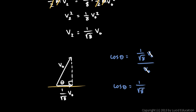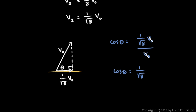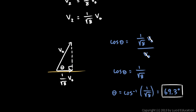So theta is the inverse cosine of 1/√8, which comes out to about 69.3 degrees. The problem is solved — and that is pretty cool.